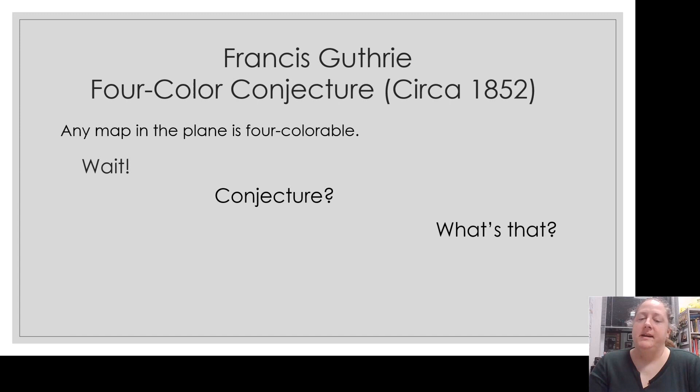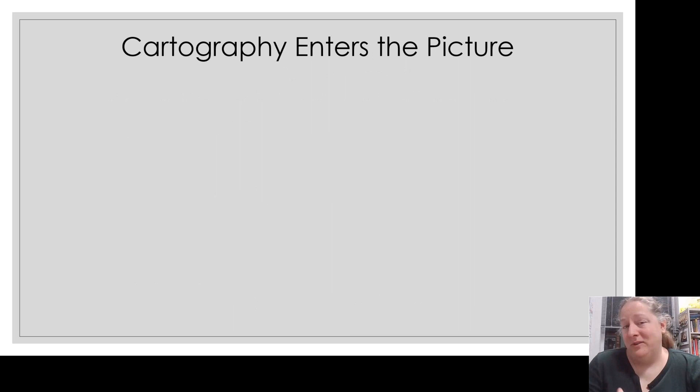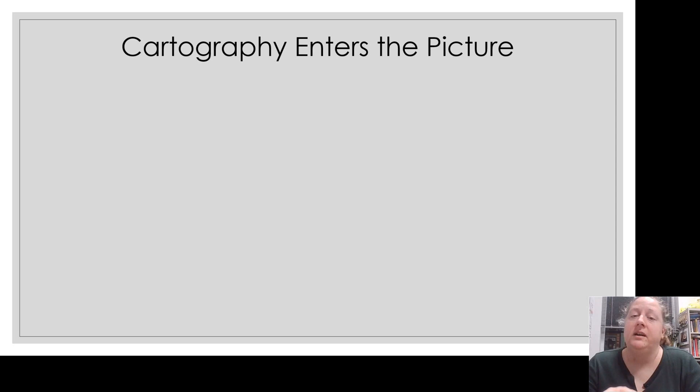That's what Francis Guthrie was doing by making this statement — he said, 'I think this is true,' putting it out there to other mathematicians to see what they think. The word 'map' takes us to cartography. At the time, they were particularly interested in being able to print a map of the counties of England and use the minimal number of colors so that no two neighboring counties were the same color.